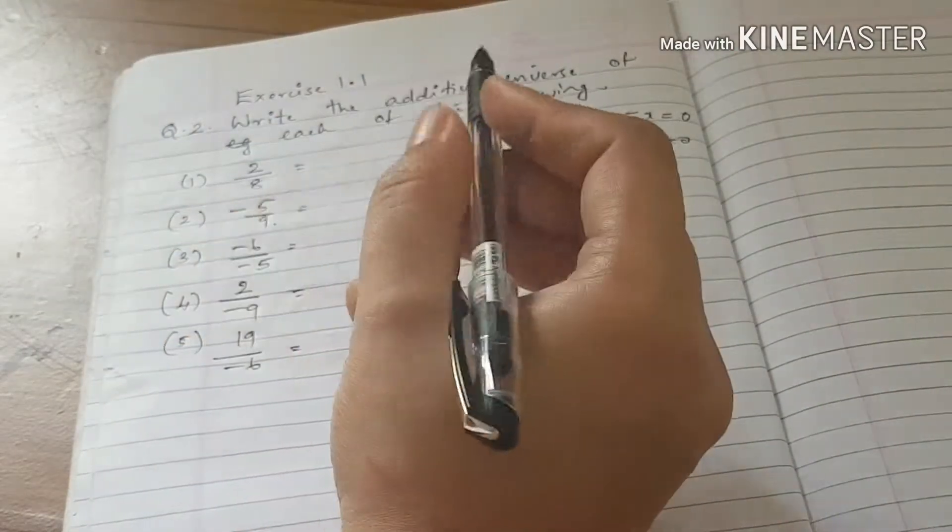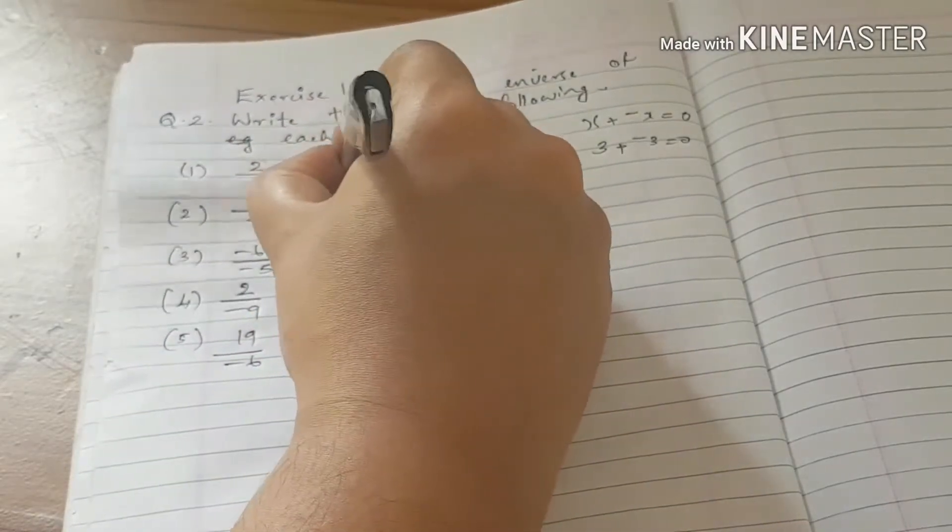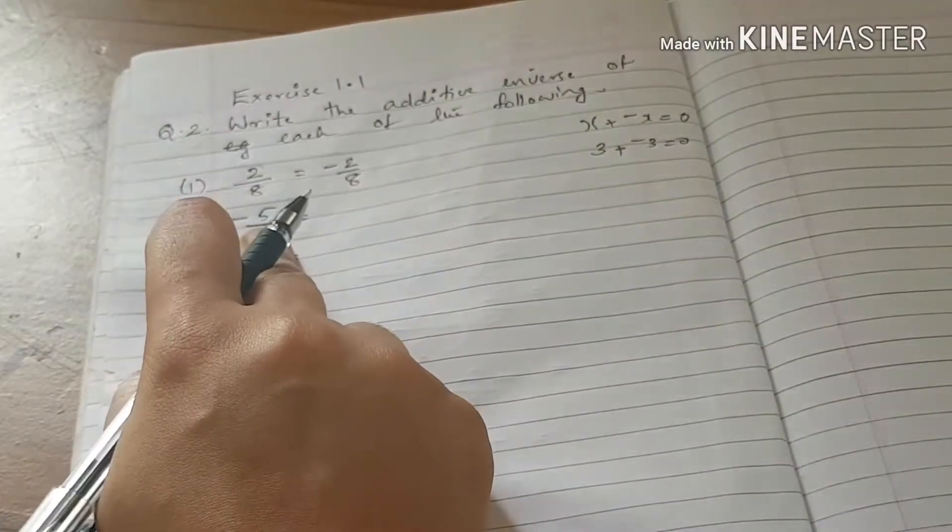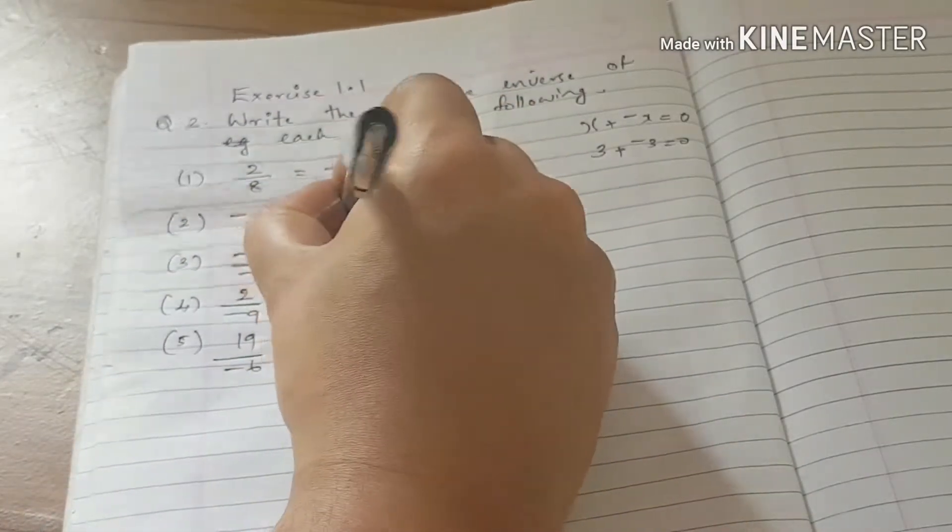For 2 by 8, the additive inverse is the negative number. For minus 5 by 9, the additive inverse is 5 by 9, positive 5 by 9.